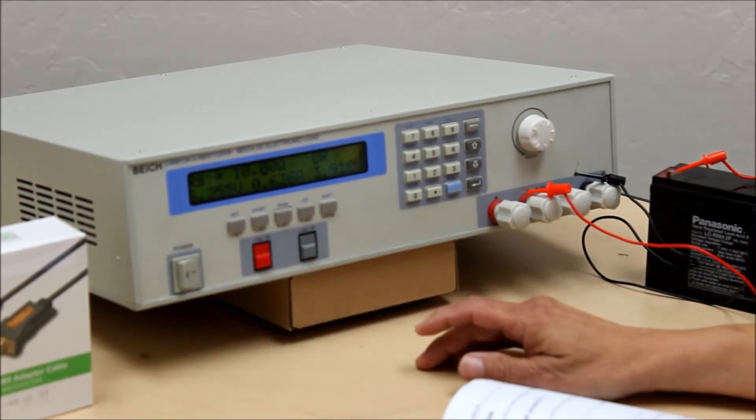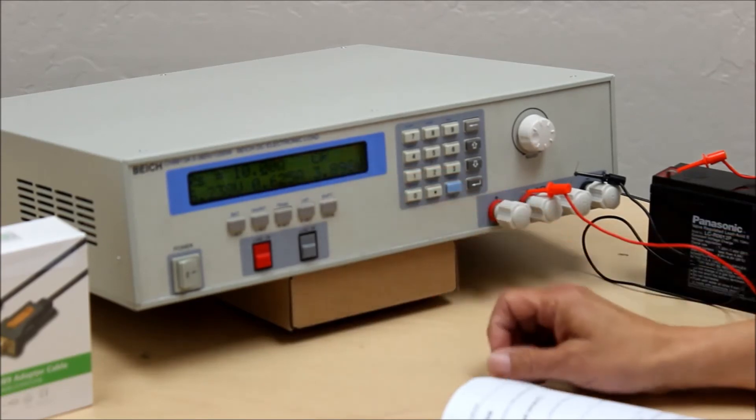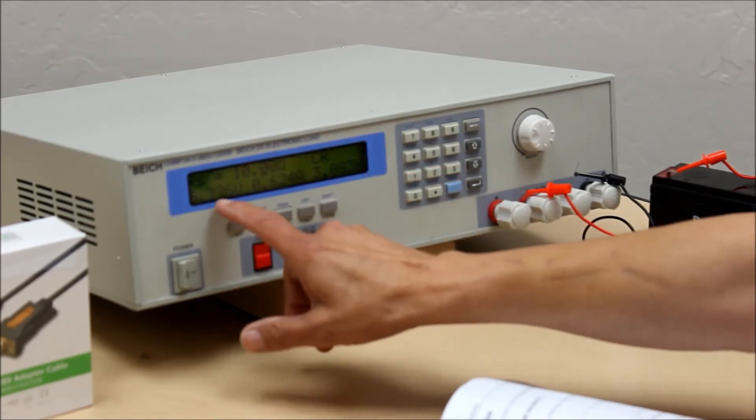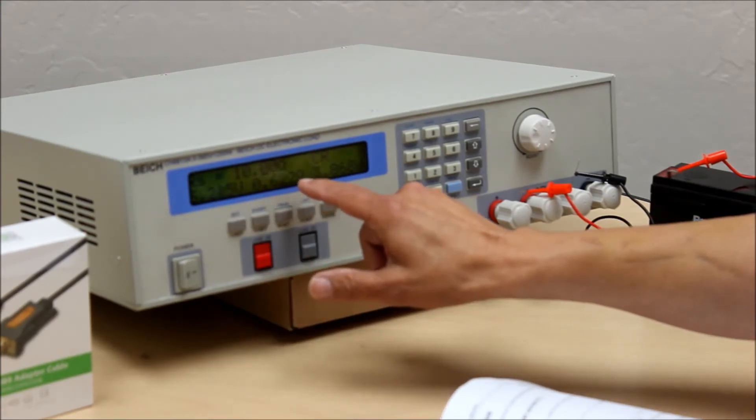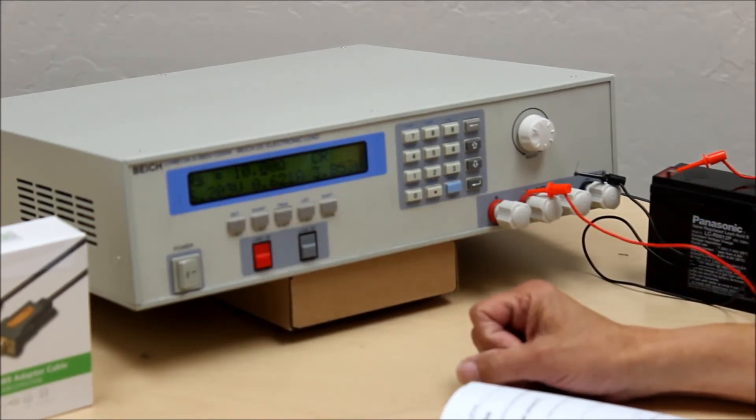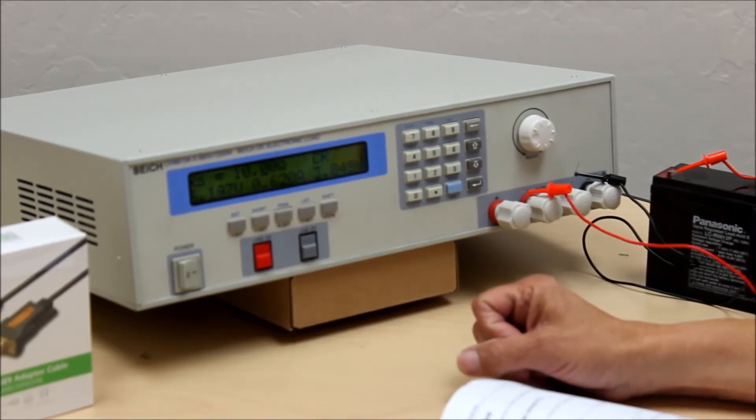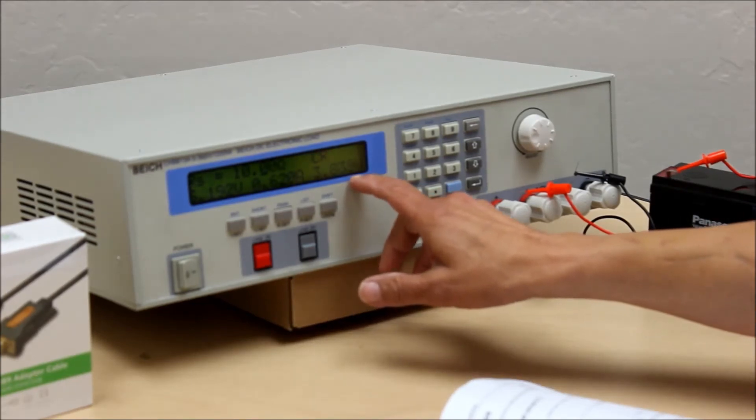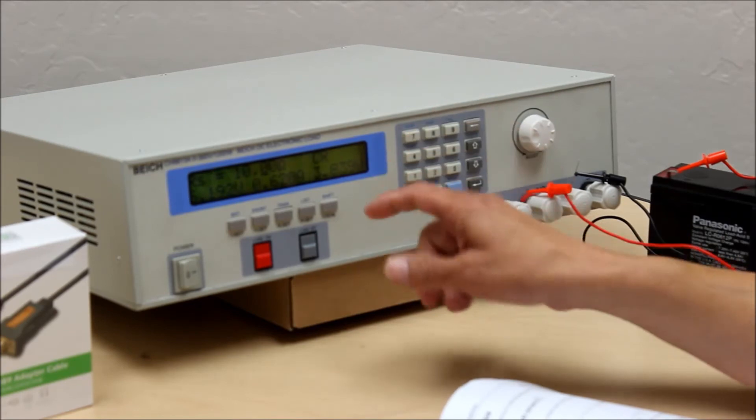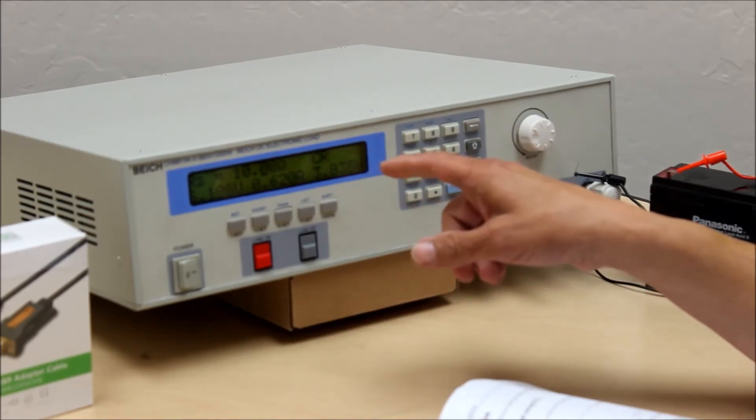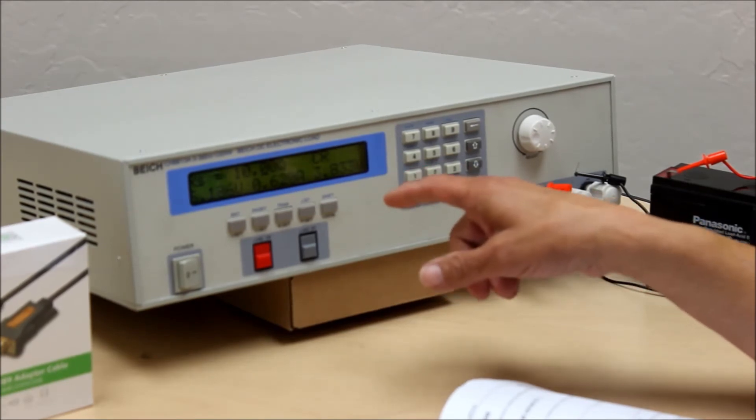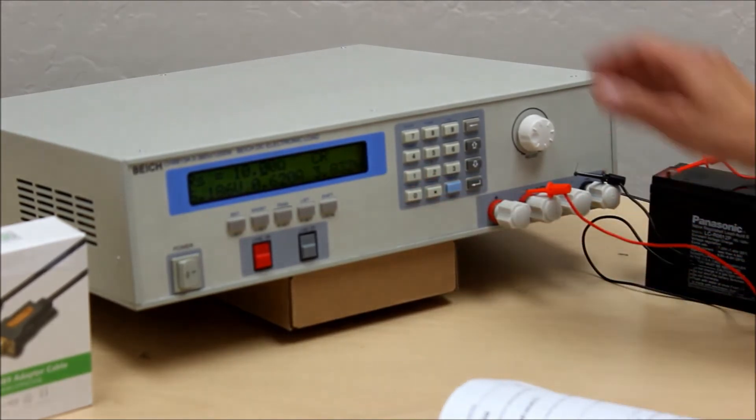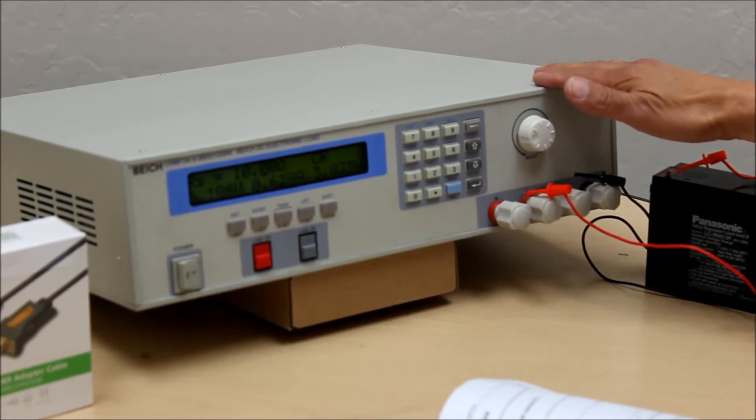If I now turn the load on we're now in CR mode which is constant resistance. Notice that the voltage is now 6.2 volts. The current is 0.622 which is the calculation using Ohm's law of the voltage divided by the resistance. And it does tell me the power. Now of course in constant resistance mode the current is going to vary as the battery voltage drops to compensate for the fact that the battery voltage is going to drop as we go along. Because the load now is constant. We're not maintaining a constant current.